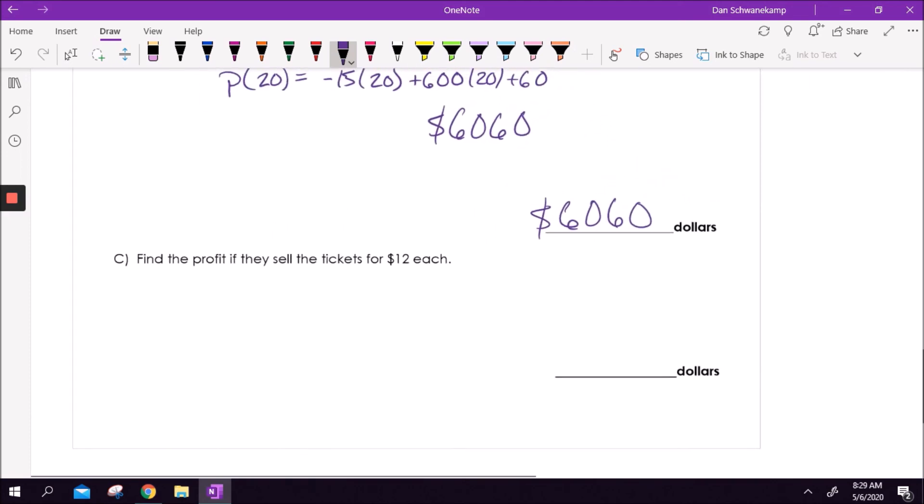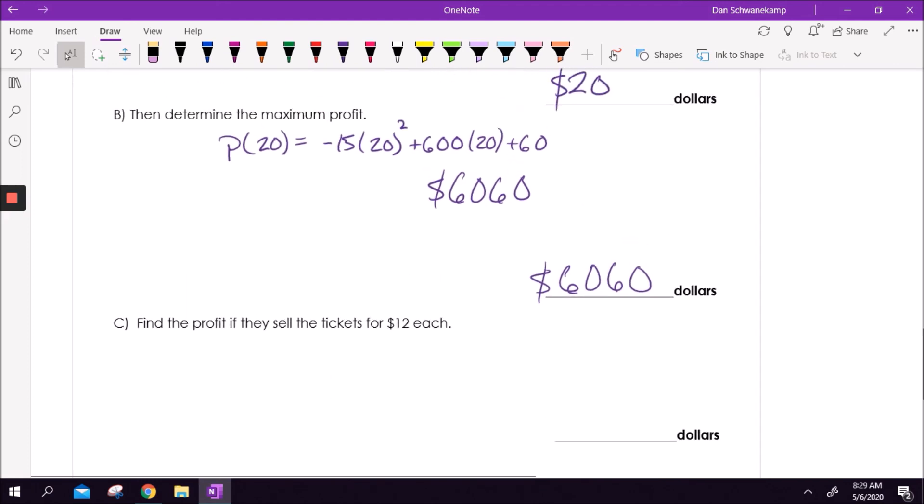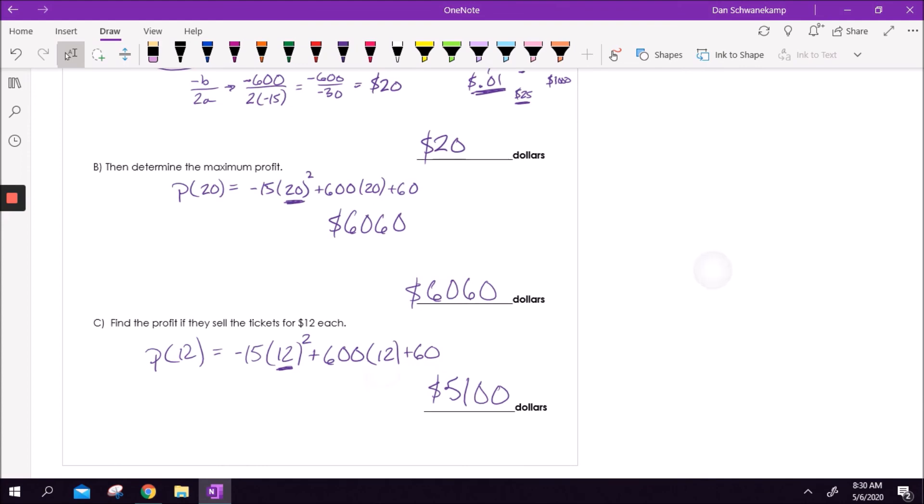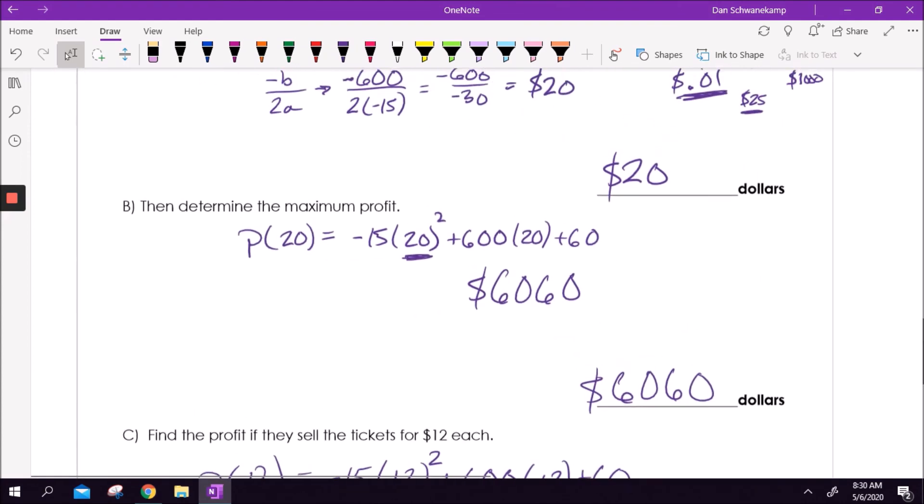Part C says find the profit if they sell the tickets for $12 each. It's the same thing we did on the last one, but on the last one we knew exactly what the best number was. This time we're just picking some random number. We're picking 12 and we're going to see how much money am I going to make if I plug 12 in. If I plug 12 in, we are going to make $5,100. So I'm not making nearly as much money. Maybe I get more people to show up and they buy more concessions, but $20 is a better ticket price.